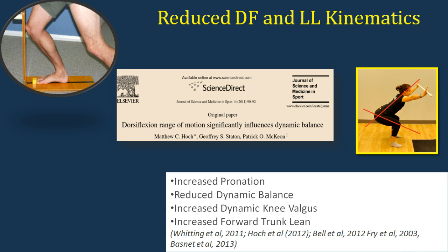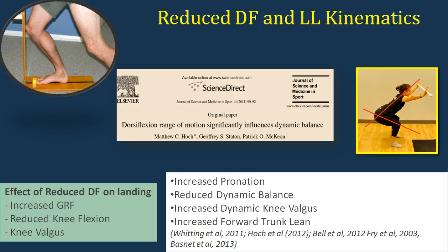Bell also showed that decreased dorsiflexion could lead to dynamic knee valgus in certain individuals. Additionally, reduced dorsiflexion is important to identify in forward lean — one of the key reasons for excessive forward trunk lean seen in the overhead squat could be reduced dorsiflexion. Dorsiflexion can also have a big impact on jumping and landing: it increases ground reaction forces, can reduce knee flexion range on landing, and can put the knee into valgus — all of which could lead to increased injury risk.